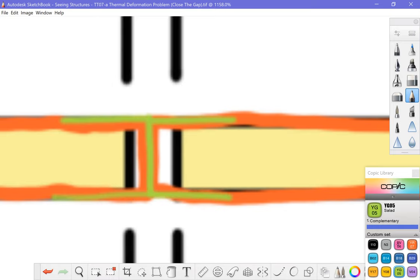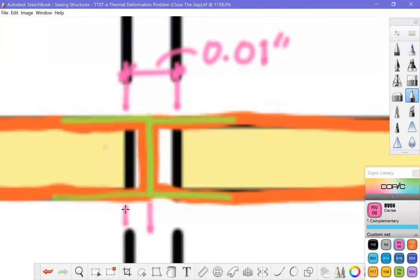all right so what we would like to do in this problem is look at this gap. The gap dimension was given to us, this is 0.01 inches, and now we see that the aluminum is going to extend to mitigate some part of that 0.01 inch gap